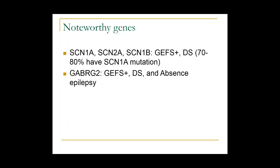The high-yield genes worth knowing are the sodium channel genes: SCN1A, SCN2A, and SCN1B — all associated with GEFS plus as well as Dravet syndrome. Between 70 to 80 percent of patients with Dravet syndrome have an SCN1A mutation. GABRG2 is a GABA channel gene seen in GEFS plus, Dravet syndrome, and absence epilepsy. So GABA channels and sodium channels are worth knowing as they relate to GEFS plus and Dravet syndrome.